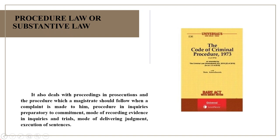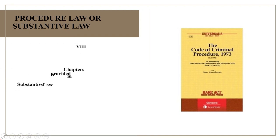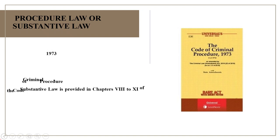It also deals with proceedings in prosecutions and the procedure which a magistrate should follow when a complaint is made to him, the procedure in inquiries preparatory to commitment, the mode of recording evidence in inquiries and trials, the mode of delivering judgment, and the executing of sentences. However, certain provisions in the code are like substantive law — substantive law relating to the prevention of offenses and the right for the maintenance of wives and children etc. are provided in chapters 8 to 11 of the Code of Criminal Procedure 1973.